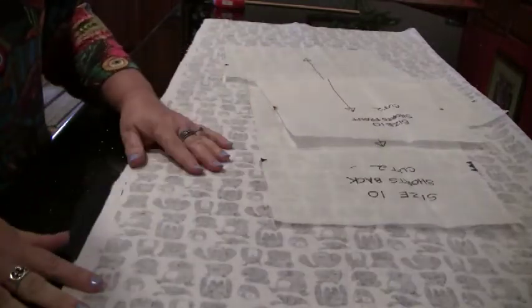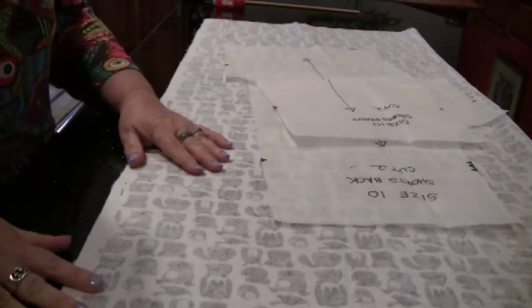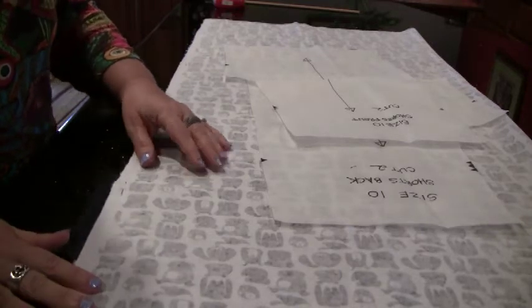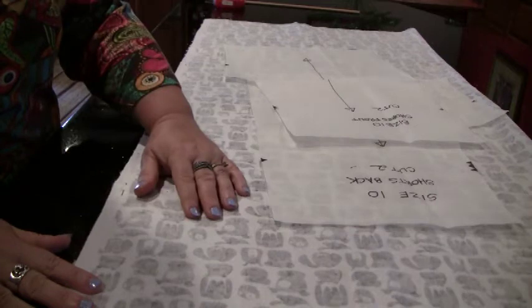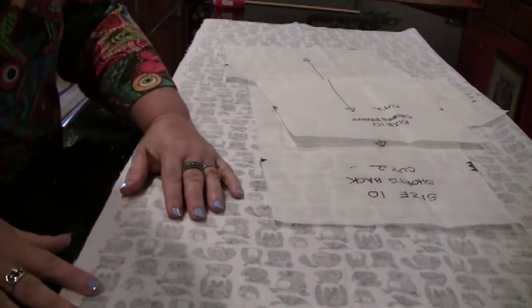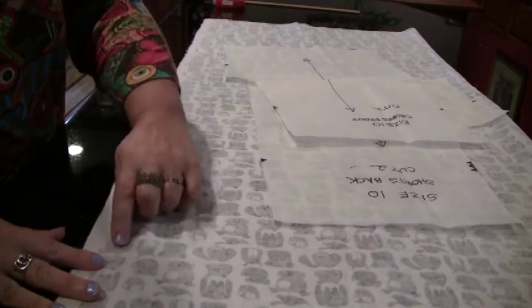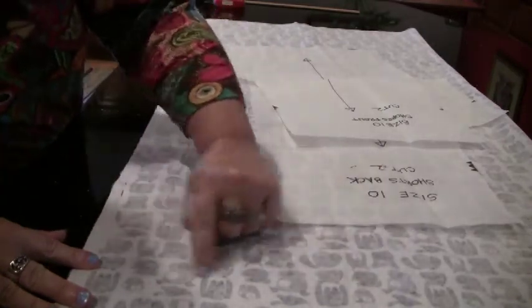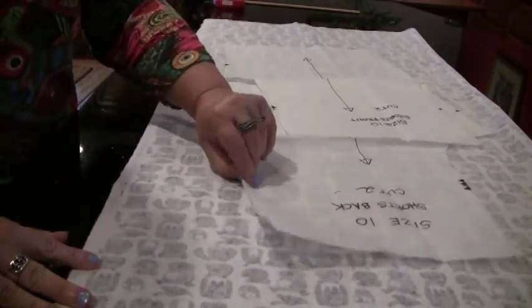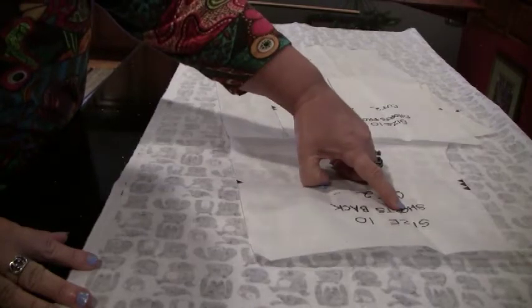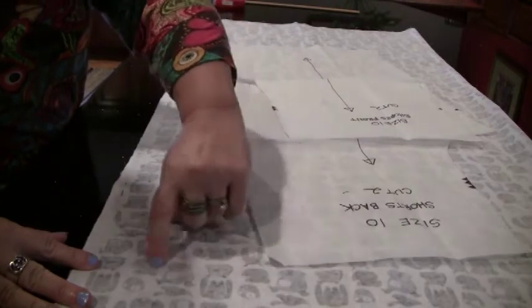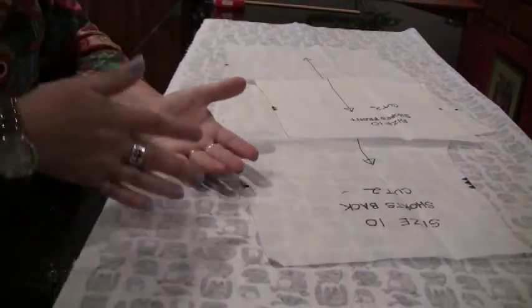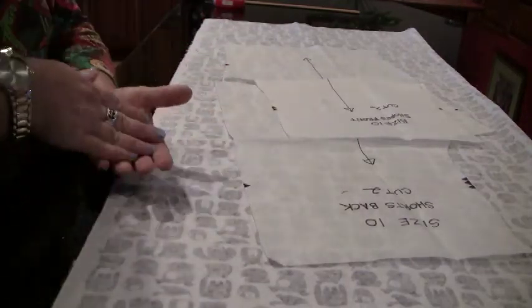Now, also, you want to look and make sure if you have a one-way design. A one-way design means that all of the writing is going the same way, or all of the design is going the same way. So mine is dog faces, and all of my dogs are going the same way. So I want to make sure that the writing on the pattern is going the same way as the dog's faces, or otherwise, when my shorts are finished, the dogs would be upside down.